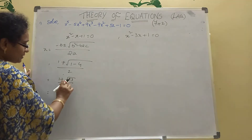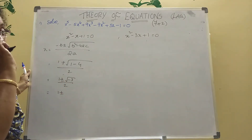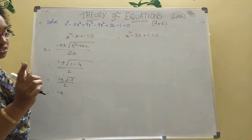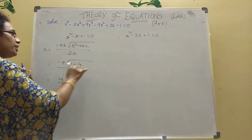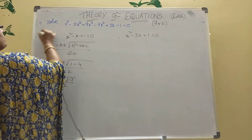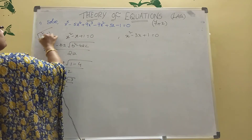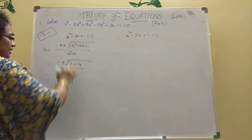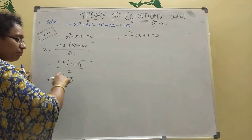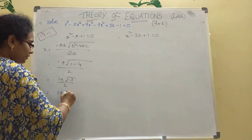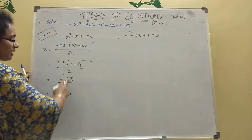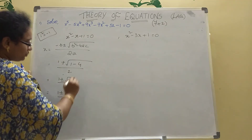1 ± √(-3) / 2. Since i^2 = -1, we have √(-3) = √3·i. So x = (1 ± √3·i) / 2.